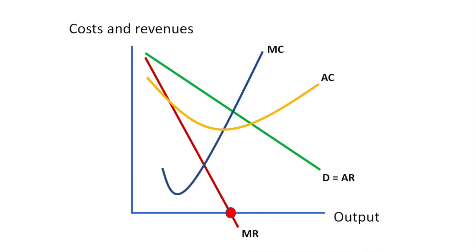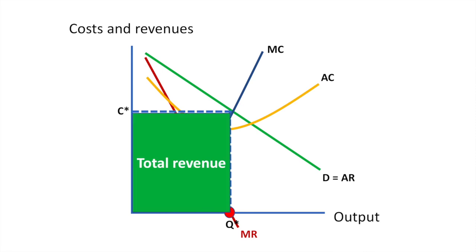Coming back to the point at which marginal revenue equals zero, note that the firm is still making supernormal profit but not the maximum profit possible. The price and quantity are C star and Q star correspondingly. The total revenue of the firm is C star Q star and total costs are below that. The difference is the area of supernormal profit as total revenue is greater than total costs.